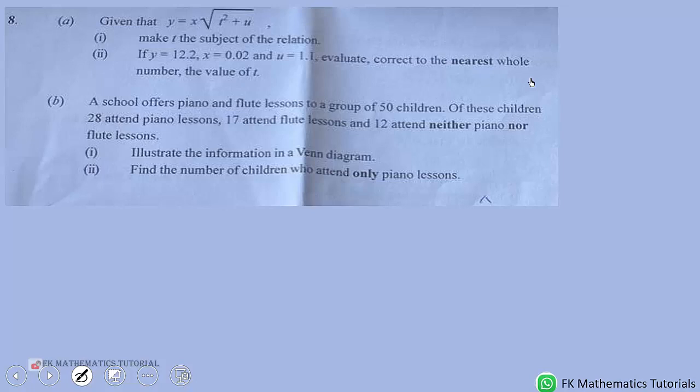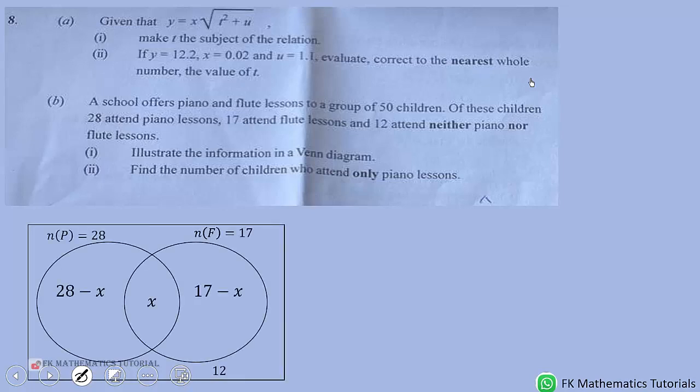Let's start. We can draw a venn diagram like this. The universal set and illustrate it. Piano for p, flute for f. We are told that 12 attend neither piano nor flute. So, it will be here.